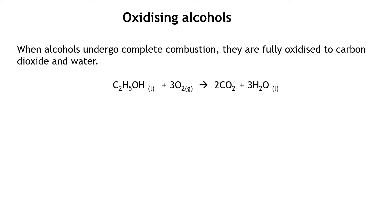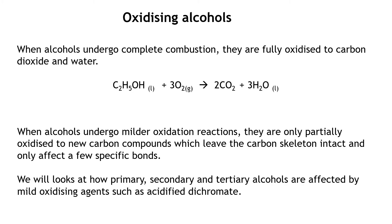When alcohols undergo complete combustion in a good supply of oxygen, they are fully oxidised to carbon dioxide and water. However, when alcohols undergo milder oxidation reactions with milder oxidising agents, they are only partially oxidised to new carbon compounds, which leaves the carbon skeleton intact and only rearranges or affects a few specific bonds. What we're going to look at is how primary, secondary and tertiary alcohols are affected by mild oxidising agents such as acidified dichromate.